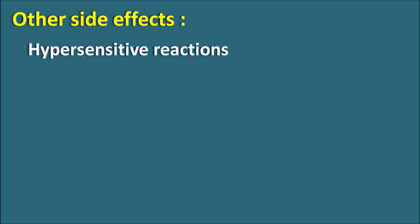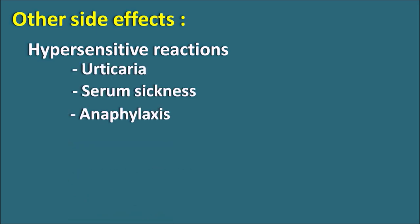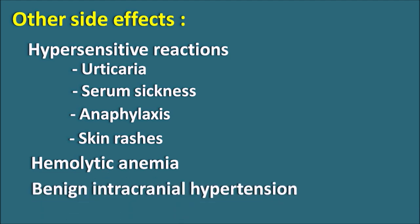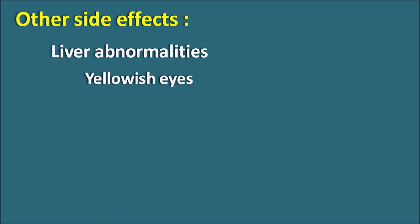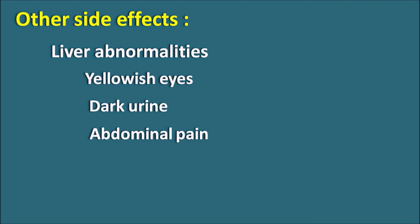Other side effects of doxycycline include hypersensitive reactions, and the drug should be avoided in patients developing allergic reactions. It may produce urticaria, serum sickness, anaphylaxis, and skin rashes. Doxycycline can also produce hemolytic anemia and benign intracranial hypertension, which is not severely harmful and returns to normal once the drug is stopped. Liver abnormalities may also occur, presenting as yellowish eyes, dark urine, and abdominal pain. It can also produce vaginitis, a yeast-like fungal infection within the vagina.